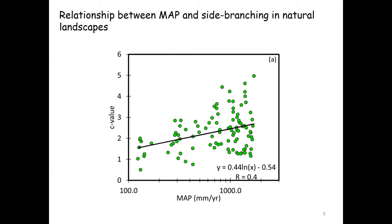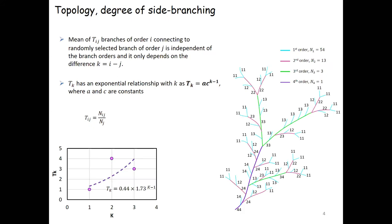When I say side branching, we quantify it using the Tokunaga self-similarity analysis. Tokunaga suggested that the ratio of side branching to branching follows an exponential type of relationship with the Tokunaga parameter C, which we refer to as the C value.